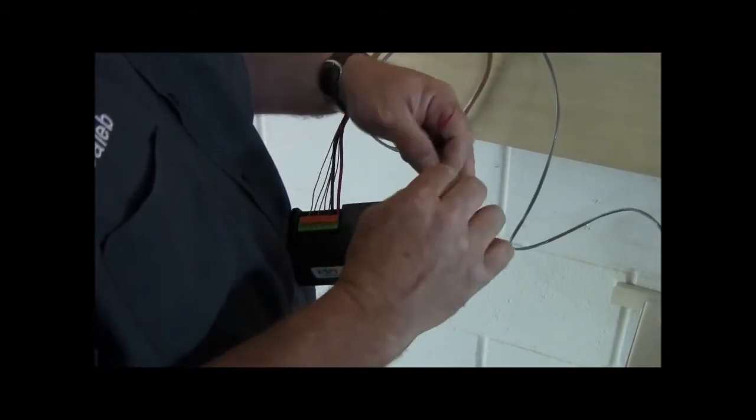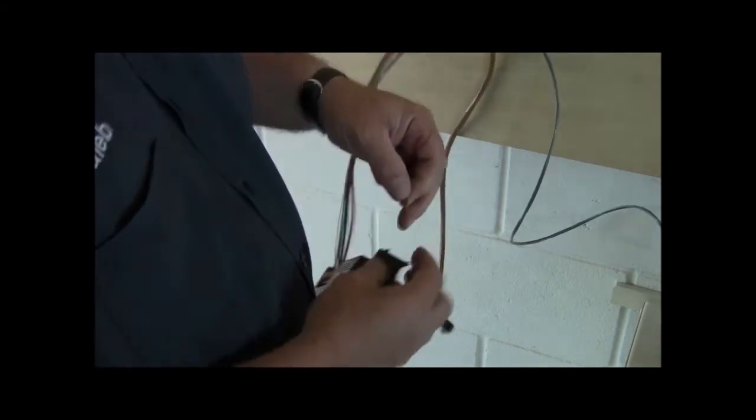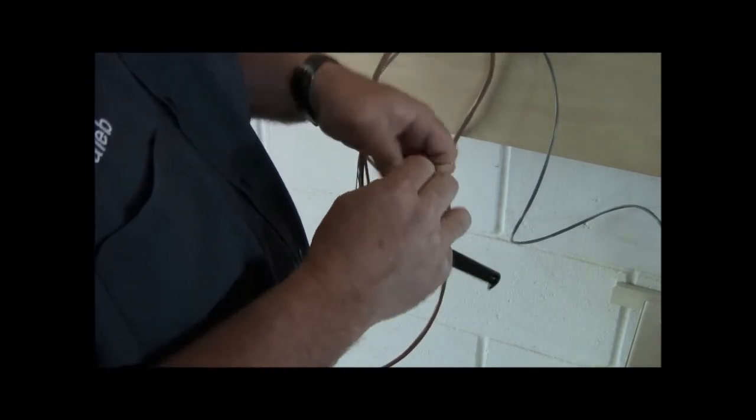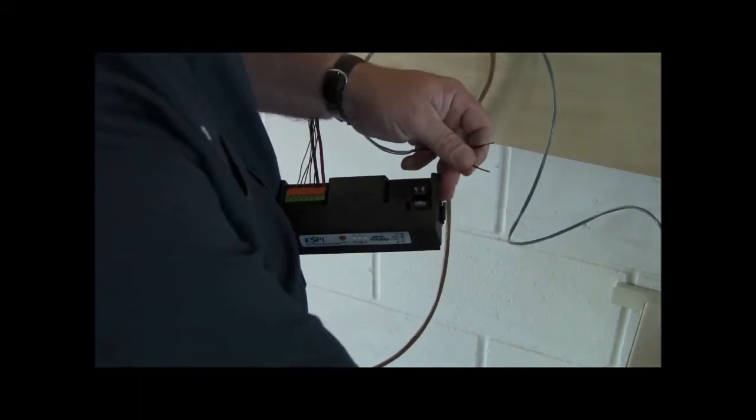Install the two 16-gauge conductors for the power source. The positive and negative terminals are marked on the battery backup and the AC-DC power converter. Red on positive, black on negative.